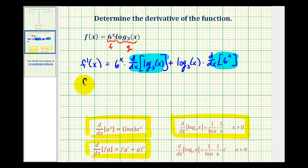So we'll have f prime of x is equal to six to the power of x times, for the derivative of log base three of x, notice how a is equal to three. So we'll have one over natural log of three x plus log base three of x times the derivative of six to the power of x. Since our base is equal to six, notice that a is equal to six. So we'll have natural log six times six to the power of x.